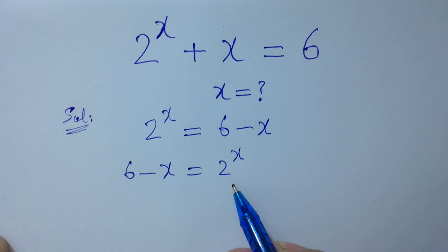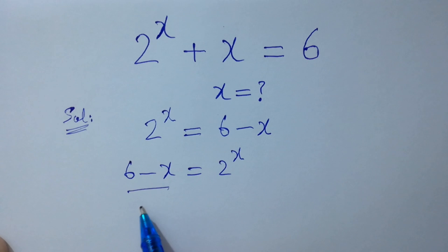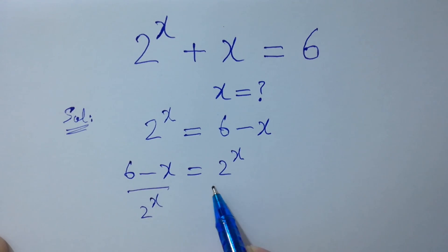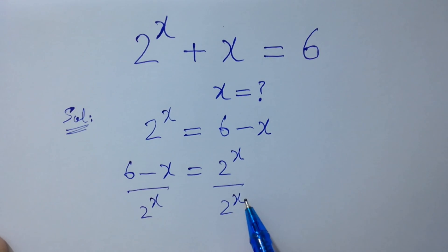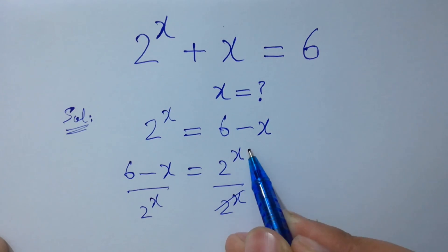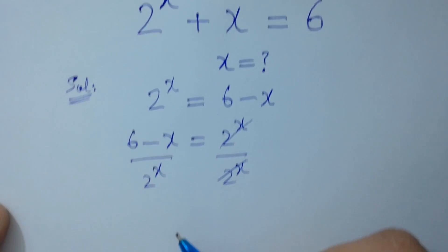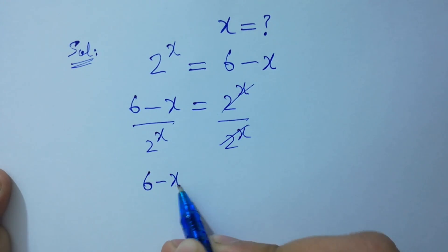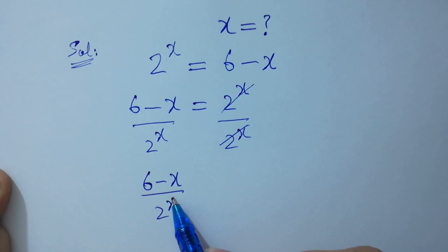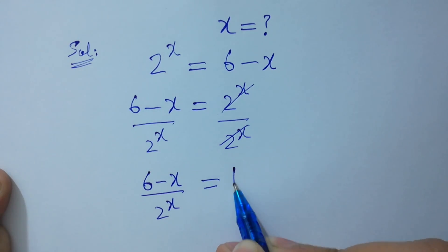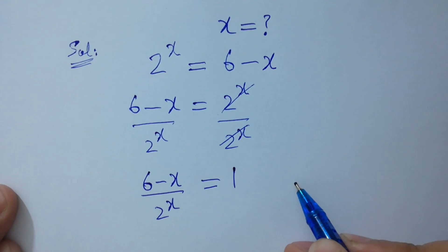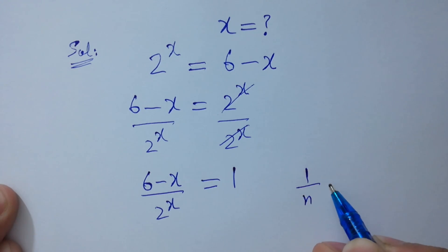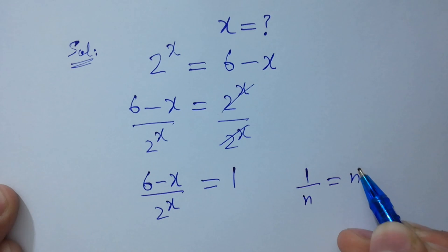To get rid of 2 to the power x, divide both sides by 2 to the power x — they cancel, giving us 6 minus x over 2 to the power x equals 1. Since 1 over n equals n inverse,